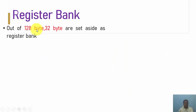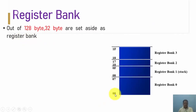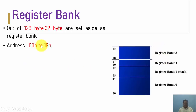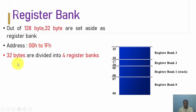The first group: out of this 128 byte RAM, 32 bytes are set aside as a register bank as shown here. Whatever memory location starts from 00H to 7FH, out of that, the 32 bytes from 00H to 1FH are set aside as a register bank. The address starts from 00H and ends at 1FH. These 32 bytes are further subdivided into four register banks as shown here.